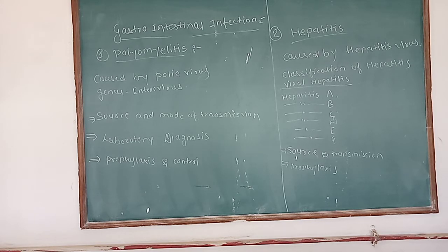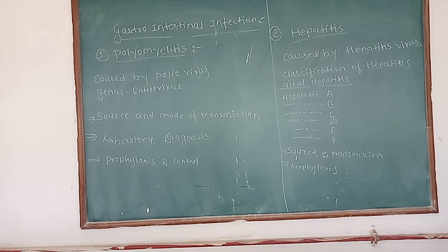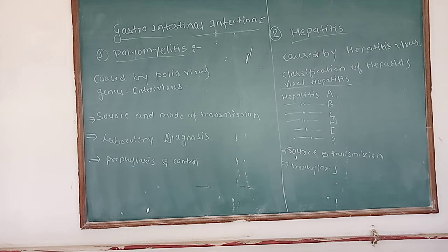By epidemiological and clinical criteria, two types of viral hepatitis are recognized. One type occurs either sporadically or in epidemics, affecting many children and young adults, and is apparently transmitted by the fecal-oral route. This is called infectious or infective hepatitis, now known as type A hepatitis.